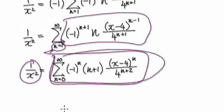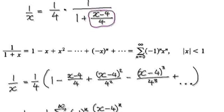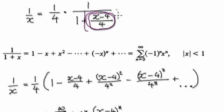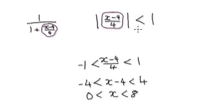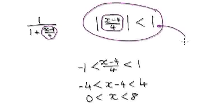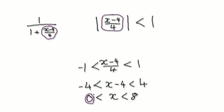Now we need to look at the interval of convergence. Going back to the geometric series, our series is valid for the absolute value of the bubble — which is (x minus 4) over 4 — to be strictly less than 1. Translating that inequality gives x greater than 0 but less than 8. So the series is valid for any x in between 0 and 8.